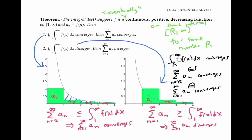since adding on finitely many extra terms to my series doesn't affect whether it converges or not. And the integral from r to infinity converges if and only if the integral from one to infinity converges, because similarly, adding on a finite little piece of area from one to r doesn't change the convergence status of the integral. So by this chain of logic, it's okay if our function starts out increasing for a while, as long as it's eventually positive, continuous, and decreasing.